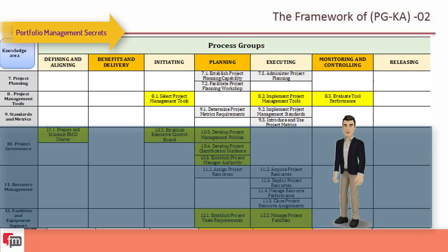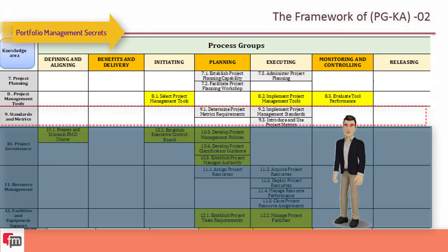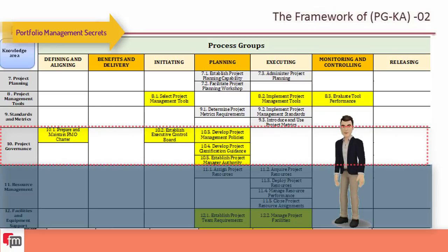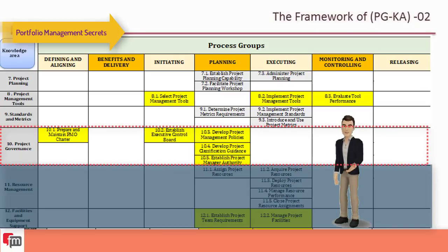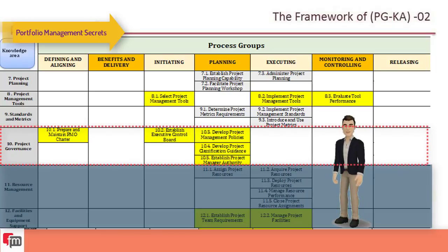Knowledge area nine is standards and metrics, with three processes: implement project management standards, determine project metrics requirements, and introduce and use project metrics. Knowledge area ten is project governance, which provides the authority and guidance necessary to enable the PMO and project stakeholders. It has five processes: prepare and maintain PMO charter, develop project management policies, develop project classification guidance, establish project management authority, and establish executive control board.